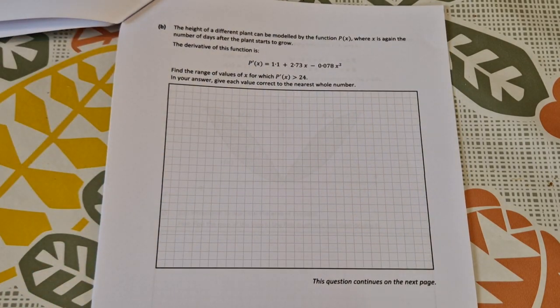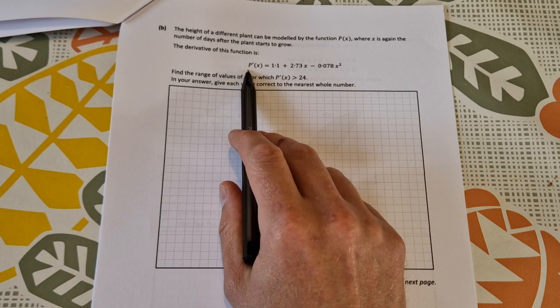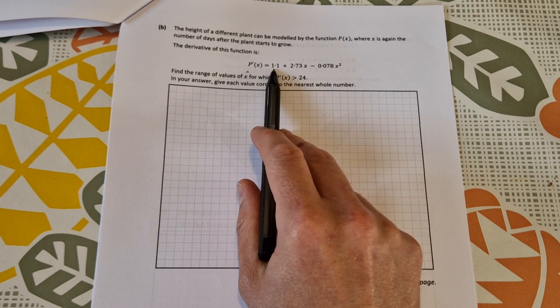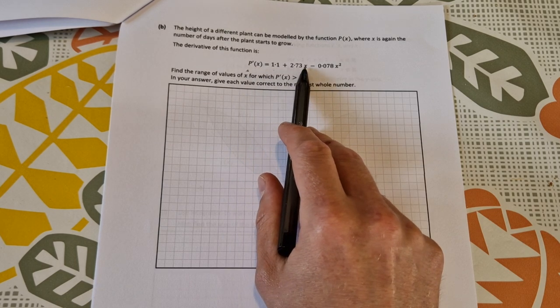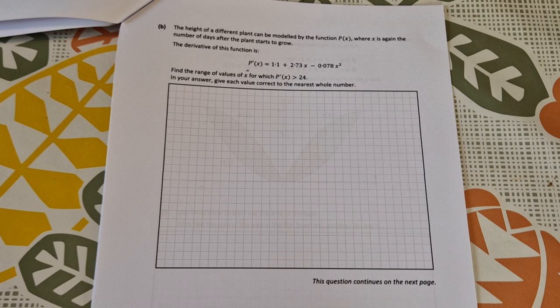Let's go on to Part B. The height of a different plant can be modeled by the function p(x), where x is again the number of days after the plant starts to grow. The derivative p'(x) equals 1.1 plus 2.73x minus 0.078x squared. Find a range of values of x for which p'(x) is greater than 24.